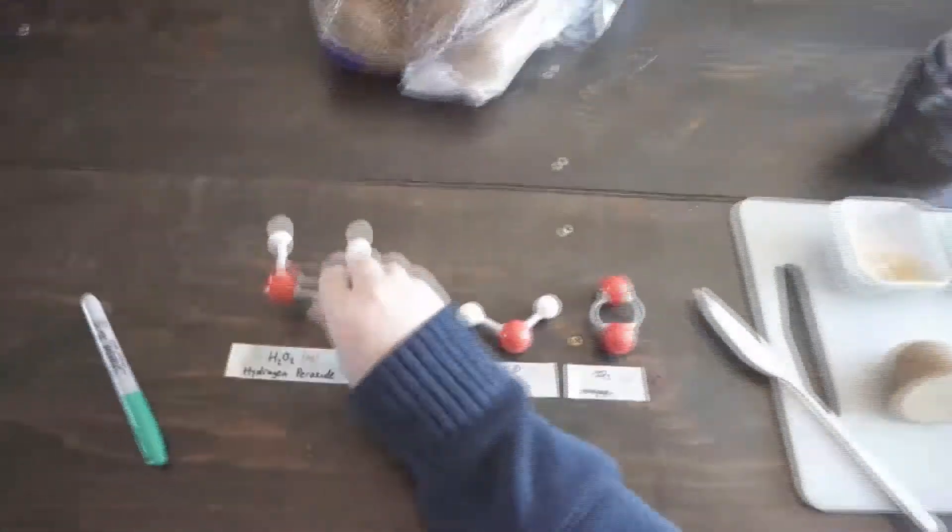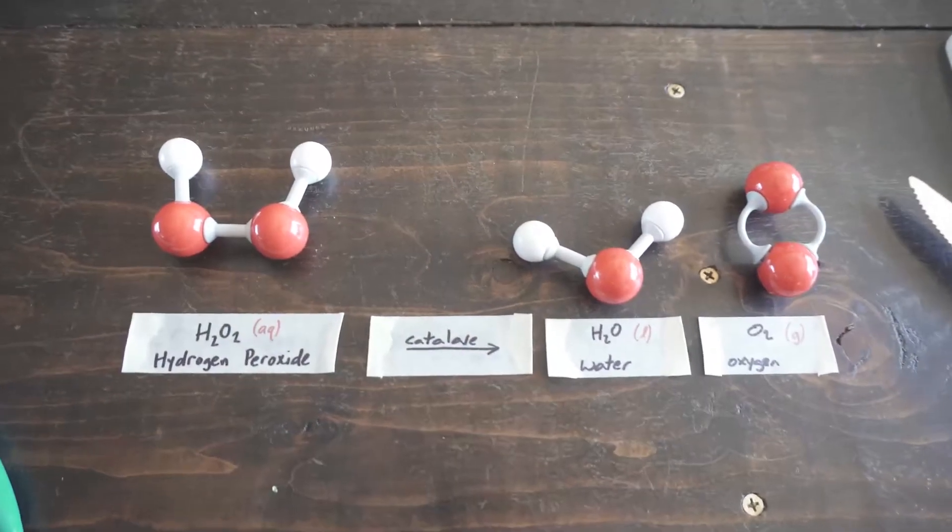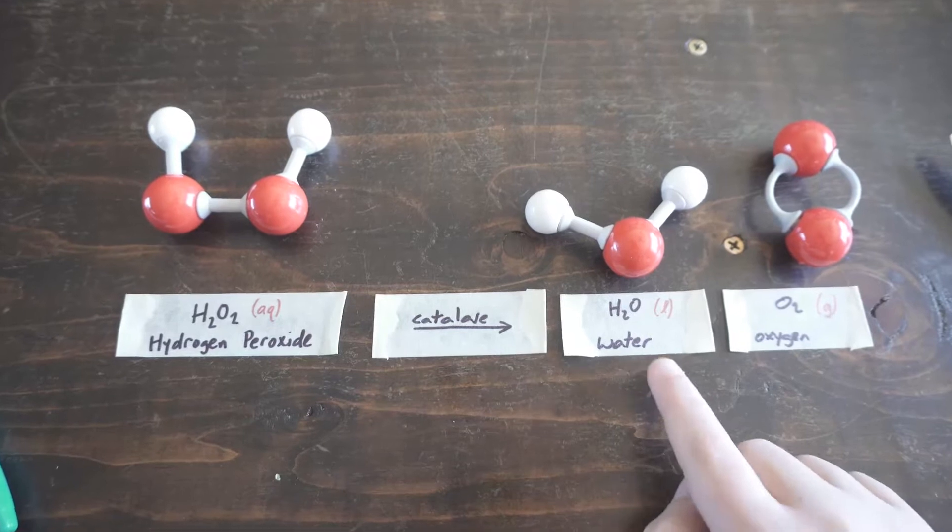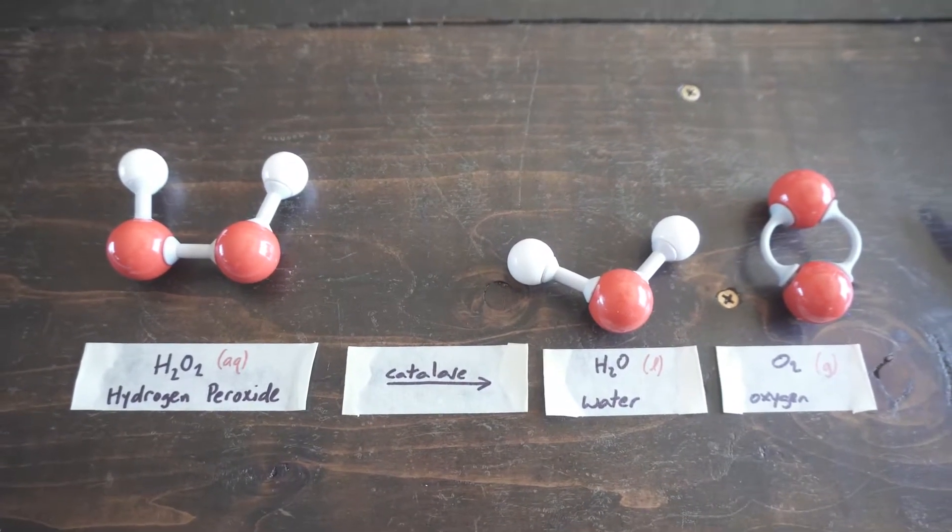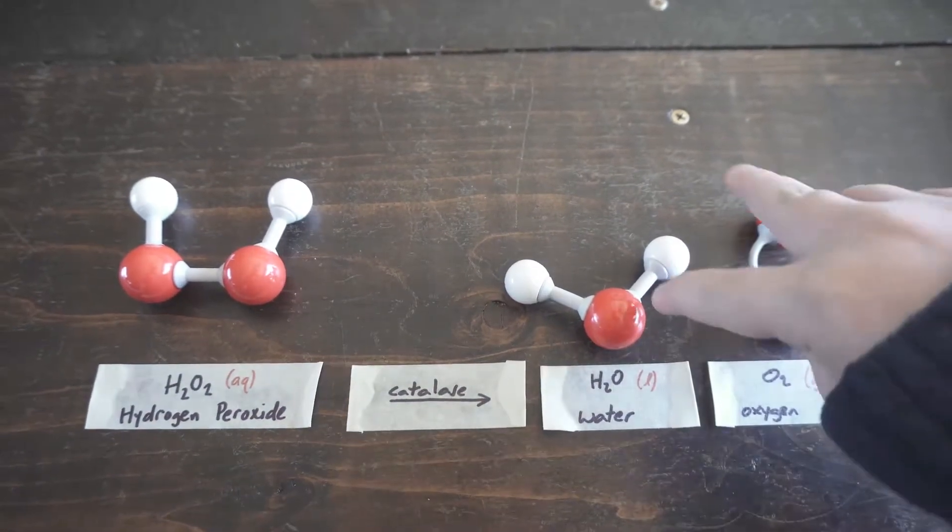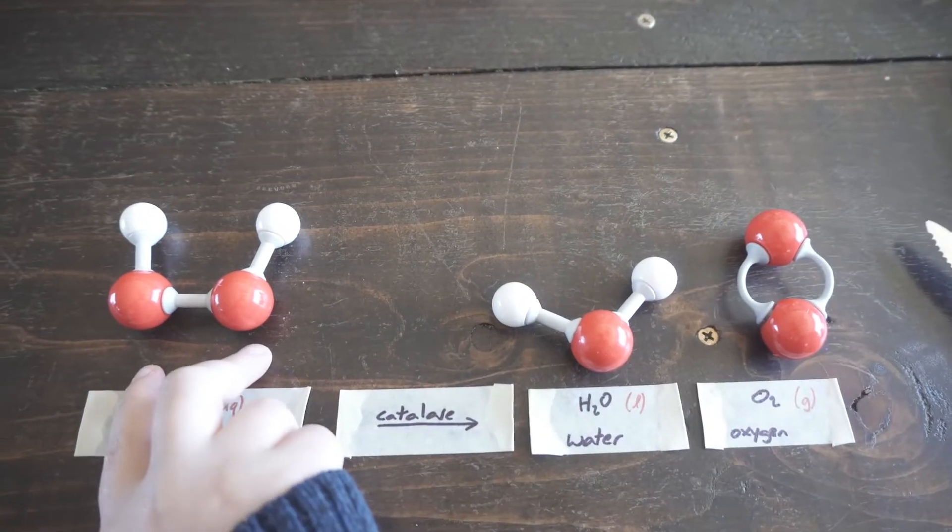So here we have hydrogen peroxide found in the hydrogen peroxide solution, and when it reacts with the molecule catalase it breaks down into the molecules water and oxygen. You can see here that we have three oxygen molecules or three oxygen atoms here but only two oxygen atoms over here.